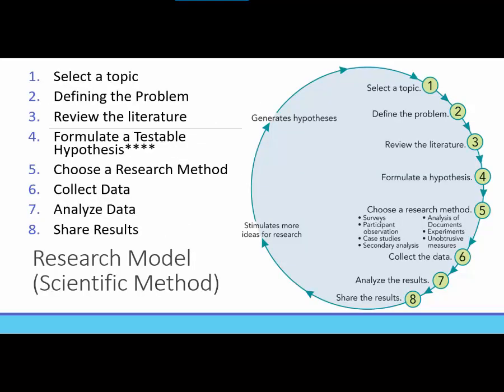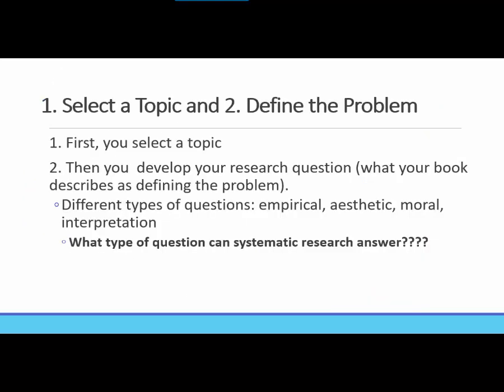Our research model — our form of the scientific method — has eight steps. In this part, we are going to go over the first four, and in part 4 I'll discuss steps five through eight. Beginning with step one, you select a topic. The great thing about sociology is that such a broad range of topics is applicable — if it relates to human behavior, human experience, or human society, it is probably an appropriate topic. After selecting the topic, you then do what we call step two: defining the problem.